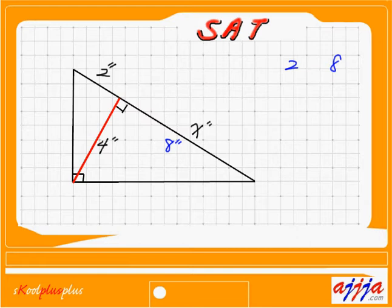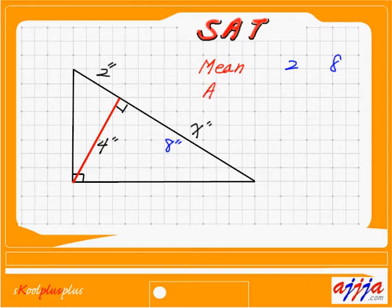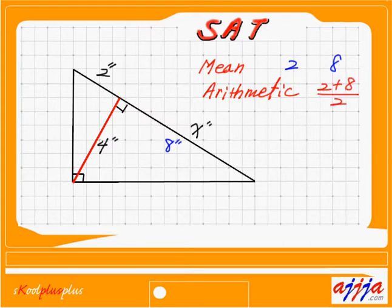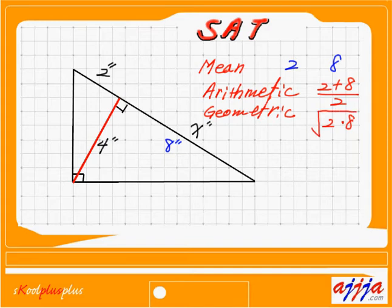I have two numbers right here: 2 and 8. Let me ask you this — what is the mean of these two numbers? Mean, which is M-E-A-N. That means the first thing that comes to your mind — the average. But we have to be careful. What kind of mean? There are two main types. One is arithmetic mean, which is the average — so (2 + 8) ÷ 2 = 5. The other one, opposite of arithmetic, is geometric mean. In this case, you just multiply 2 times 8, then put the square root.